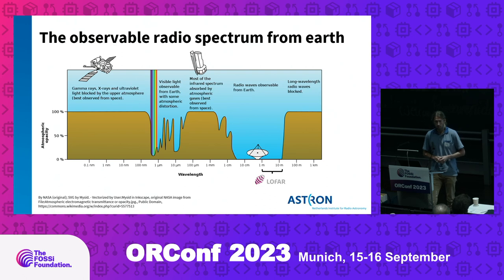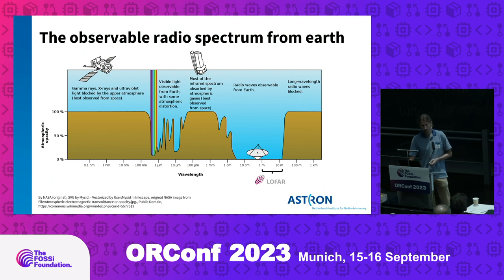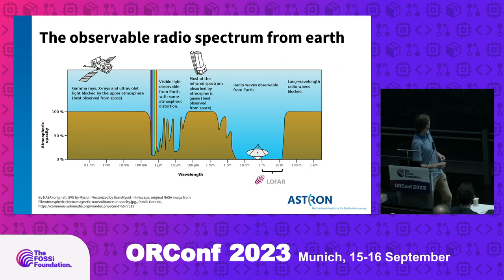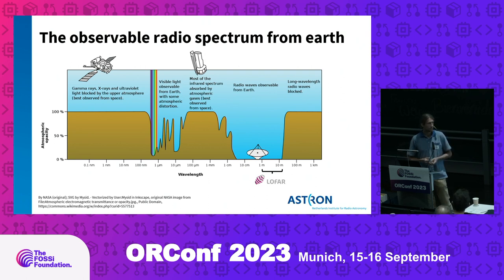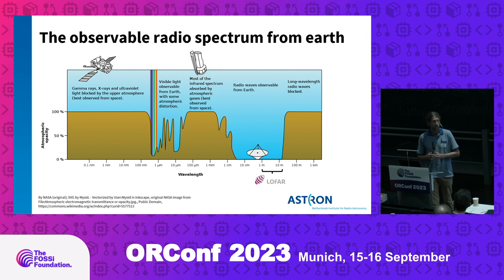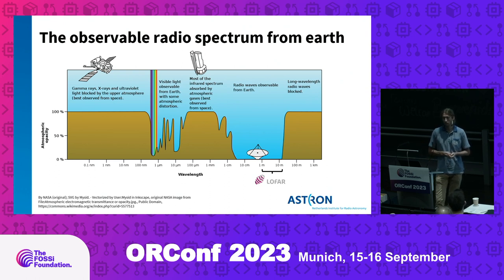In radio astronomy we look at a different part of the spectrum. In optical astronomy you look at visible light, which propagates through our ionosphere. But a big part of the radio spectrum is blocked — X-ray and gamma rays are blocked, which is lucky for us as humans. There is also a large portion of the radio spectrum that does propagate through Earth, in the gigahertz to megahertz regime, and that is what we address with radio telescopes.